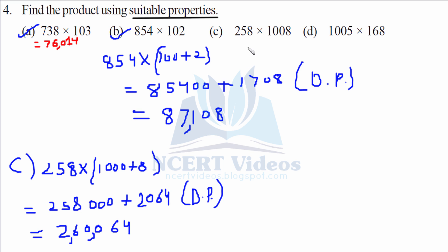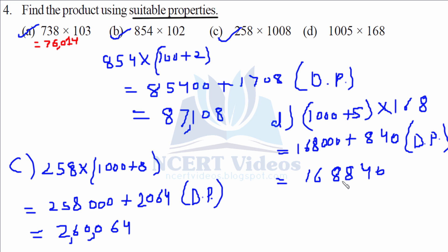Now the last part. We can split 1005 into 1000 plus 5. And then applying distributive property. This is D. So we have 168000 plus 840 by using distributive property. So when we add this, it turns out to be 168840. Let's go to the next question.